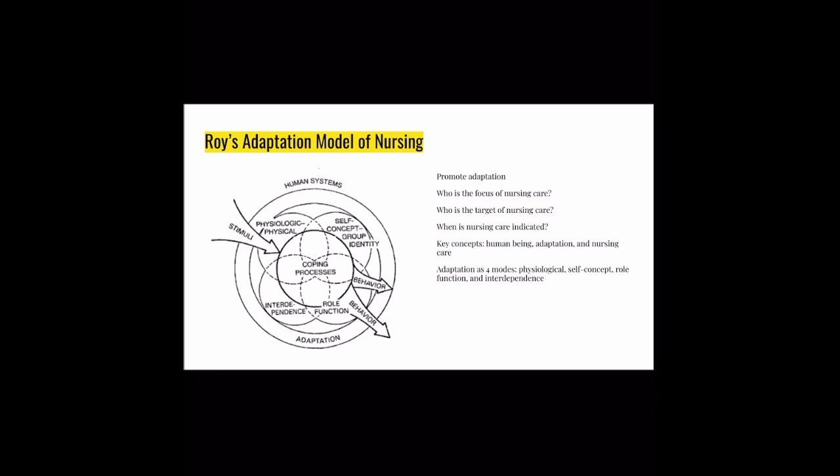The physiological mode involves maintaining physical health, such as homeostasis — making sure you have enough food, water, and oxygen. Self-concept involves mental health and also includes someone's perception of their physical health. For example, people with eating disorders and how their perception of their body affects mental health.